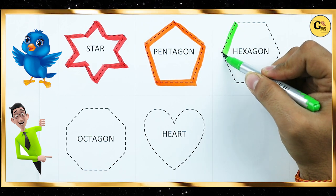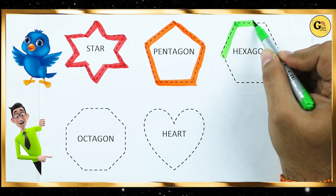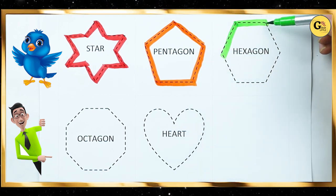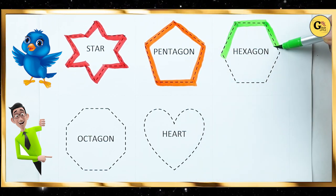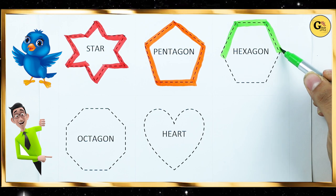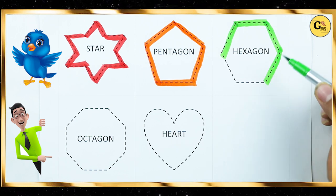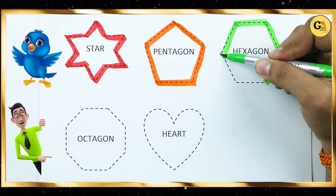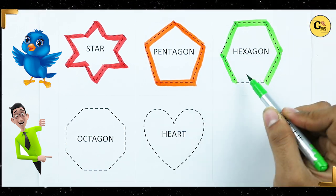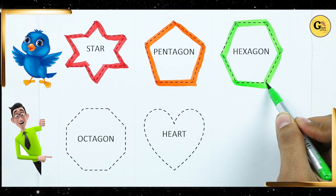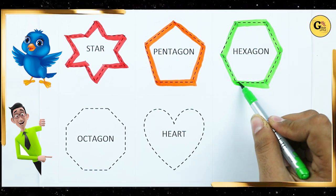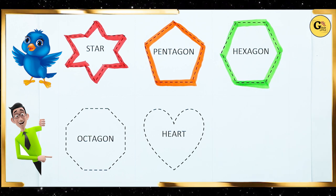Hexagon. One line, two line, three line, four line, five line, six line. It's a hexagon.